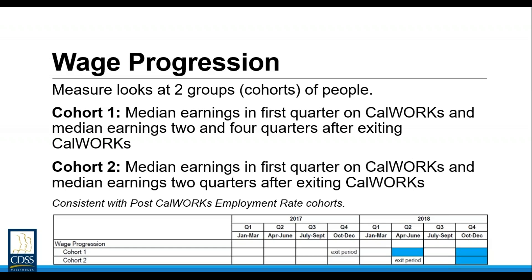Using the data that identifies the individual members of cohort one, we look back and find each individual's entry quarter. There will be variance in this because people who exit in a specific quarter can come on aid at many different periods. We will look back, find the entry quarter for each individual in the cohort, and if they have EDD-reported wages in their entry quarter they will be included in the calculation for that entry period, and then we derive a median income for that cohort's entry quarter.